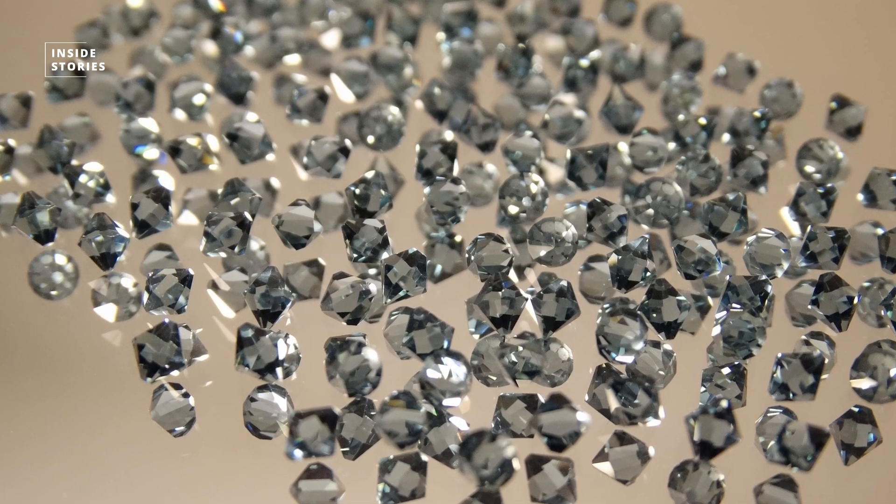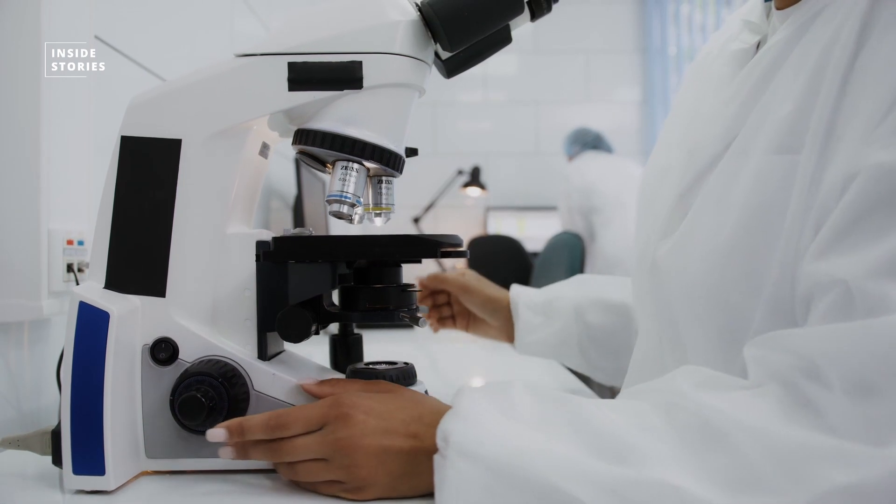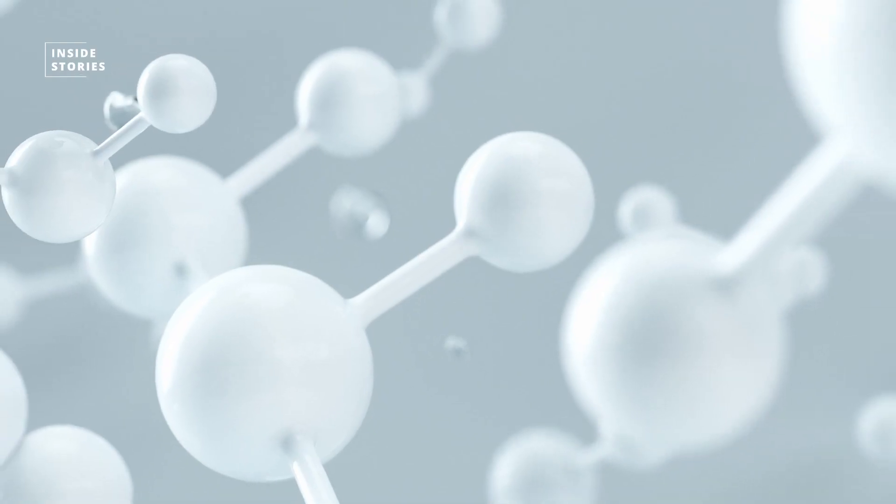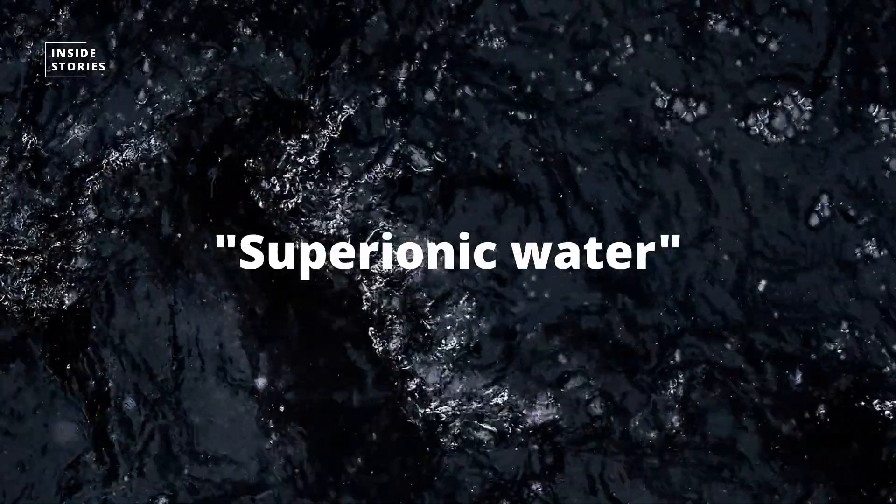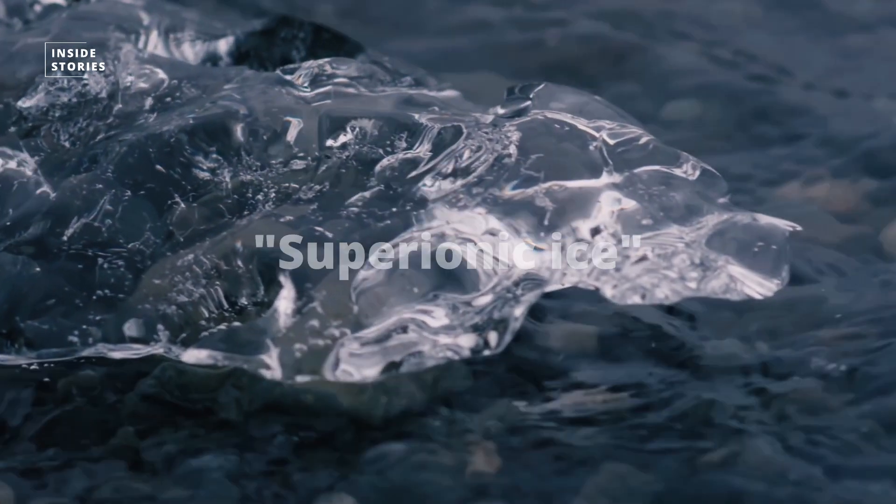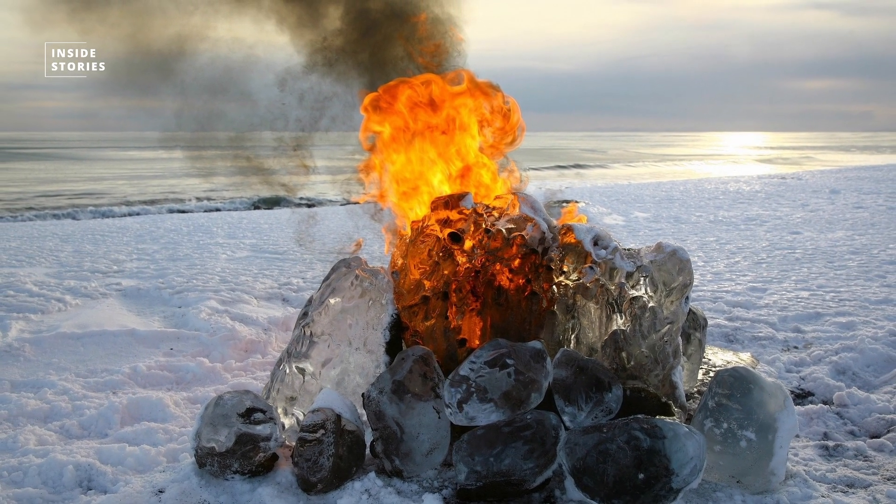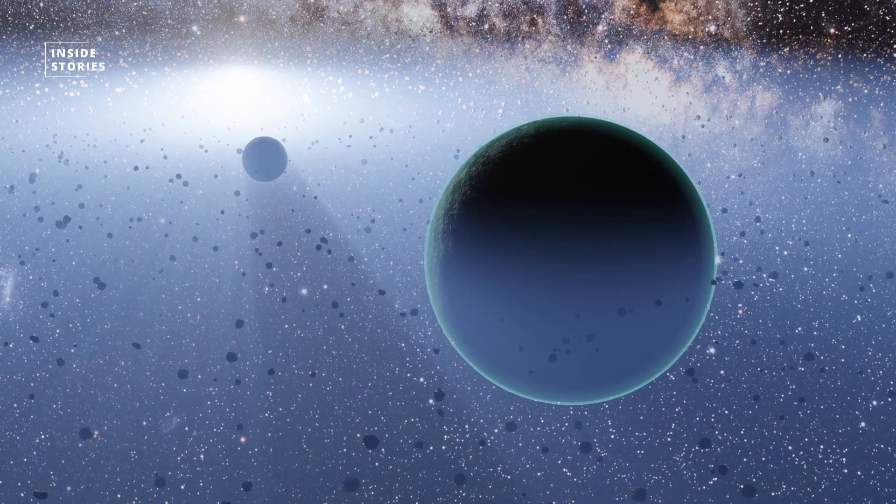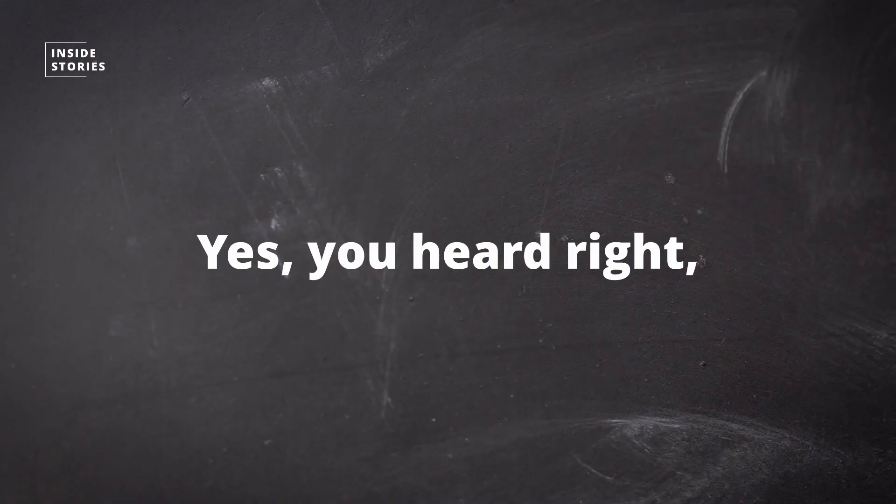The crystallized carbon turned into nanodiamonds, which measured just a few nanometers, while the hydrogen and oxygen turned into superionic water or superionic ice, which is a black, incredibly hot ice that may actually be the most common form of water in the universe. Yes, you heard right, water can freeze and boil at the same time.